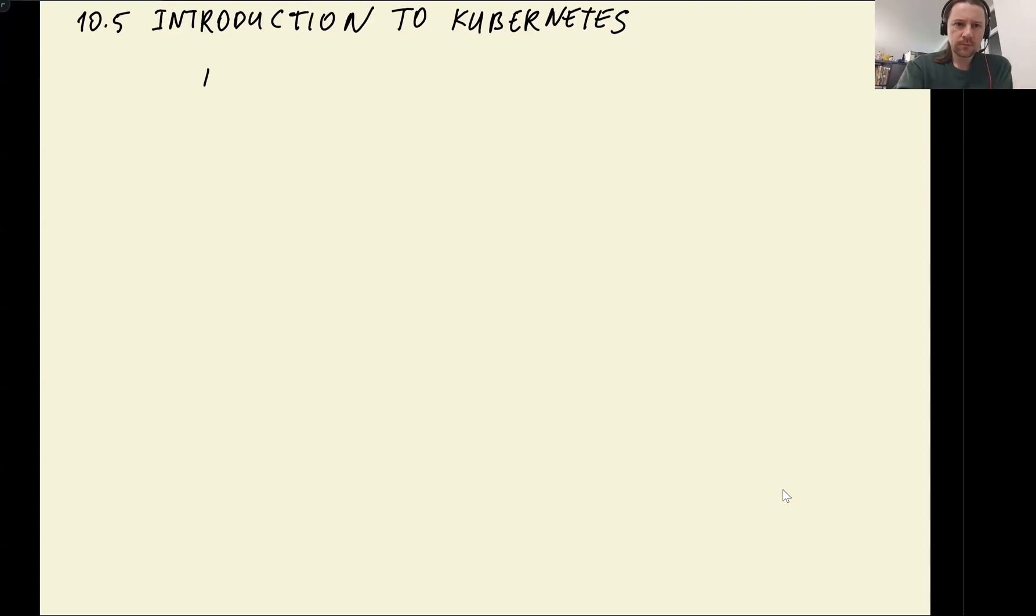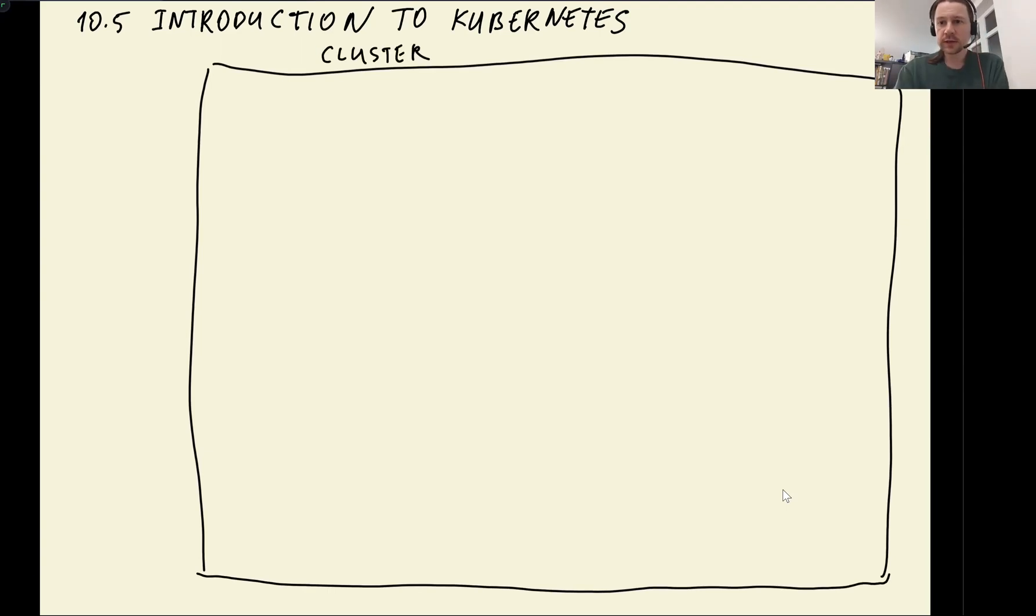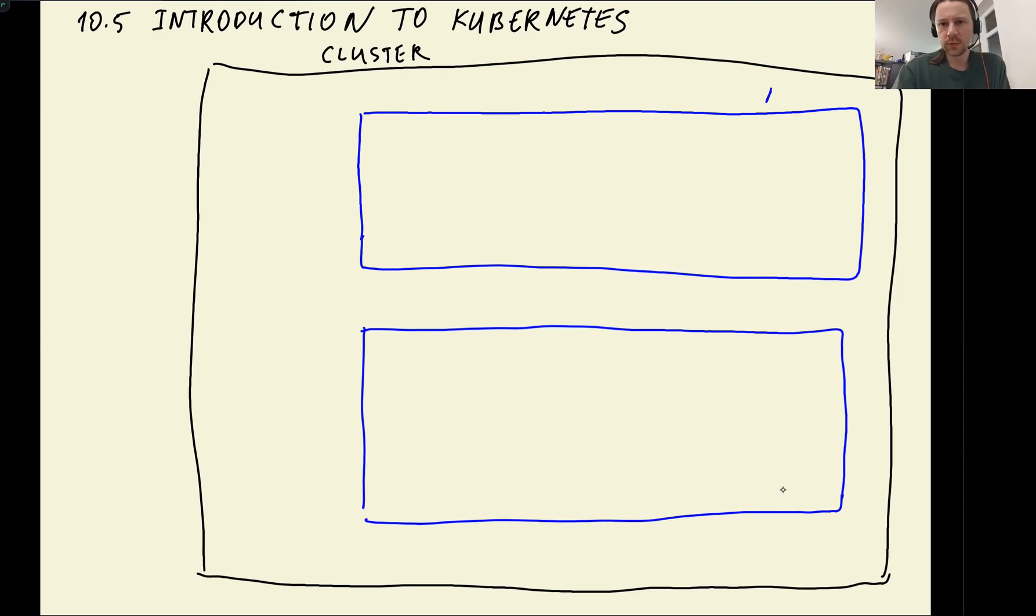Let's say this is our cluster. This box is our Kubernetes cluster. And then inside this cluster we have nodes. Nodes are actually like machines or servers where things are running. This is node and this is node. Let me write it down.